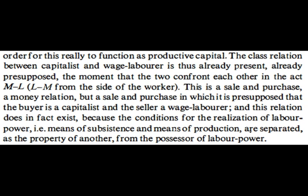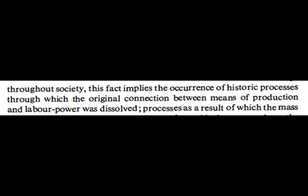On the next page he talks about the fact that this can only work as capital if, about the middle of page 115, the class relation between capitalist and wage labourer is already present, already presupposed, the moment that the two confront each other in the act of money into labour power. It's a sale and a purchase, a money relation. But what is presupposed is that the buyer is a capitalist and the seller a wage labourer — this relation exists because the conditions for the realisation of labour power, i.e., means of subsistence and means of production, are separated as the property of another from the possessor of labour power.